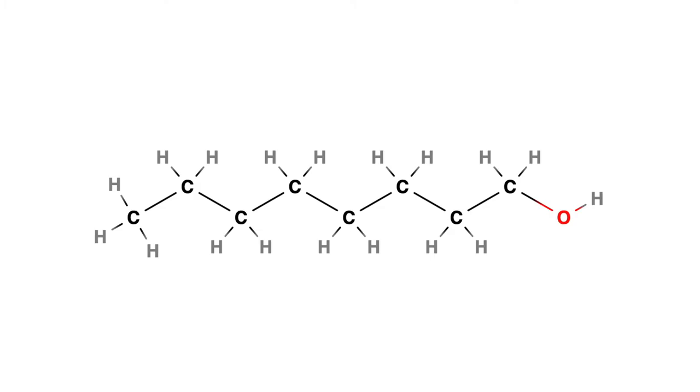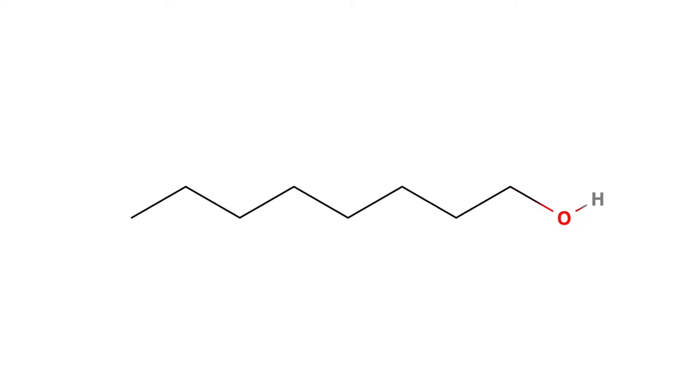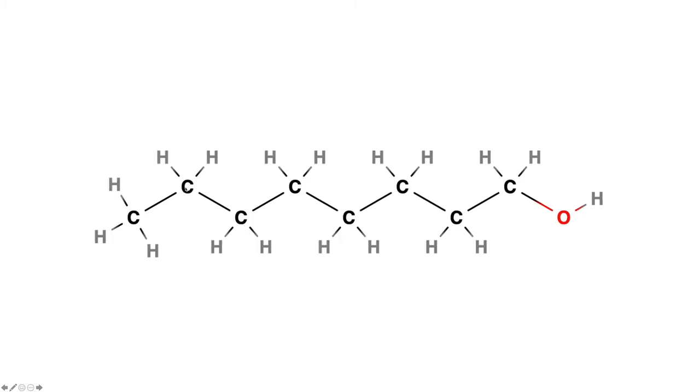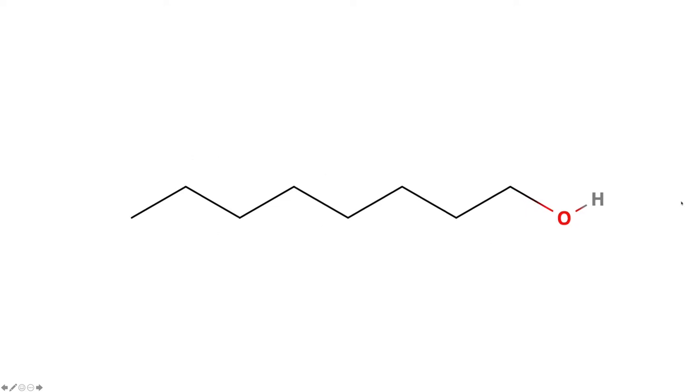A more streamlined way of depicting this molecule is like this. It's called the skeletal structure. The end of each line and the kink in each zig or zag represents a carbon atom, and the hydrogen atoms on each carbon atom are implied.